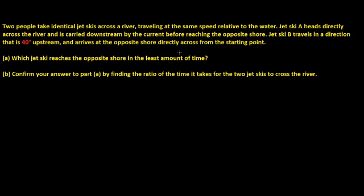Today we have this problem of two people taking jet skis across the river. They travel at the same speed relative to the water. Jetski A heads directly across the river and is carried downstream by the current, and Jetski B travels in a direction that is 40 degrees upstream and arrives at the opposite shore directly across from the starting point.